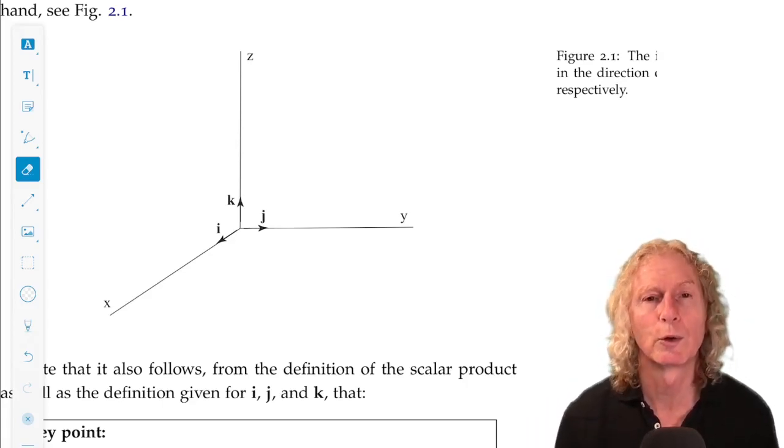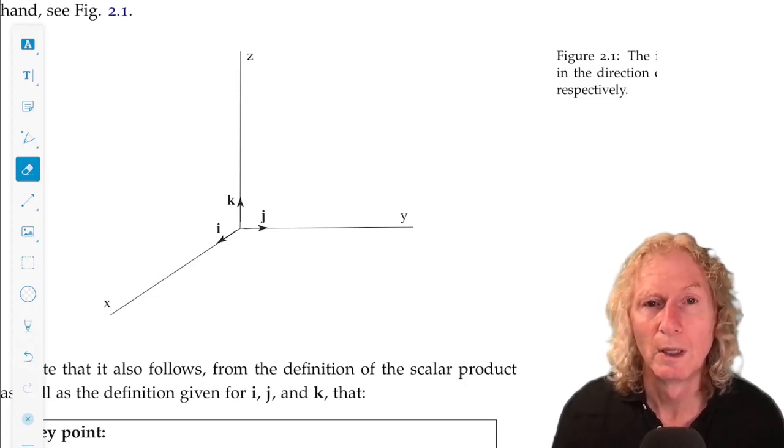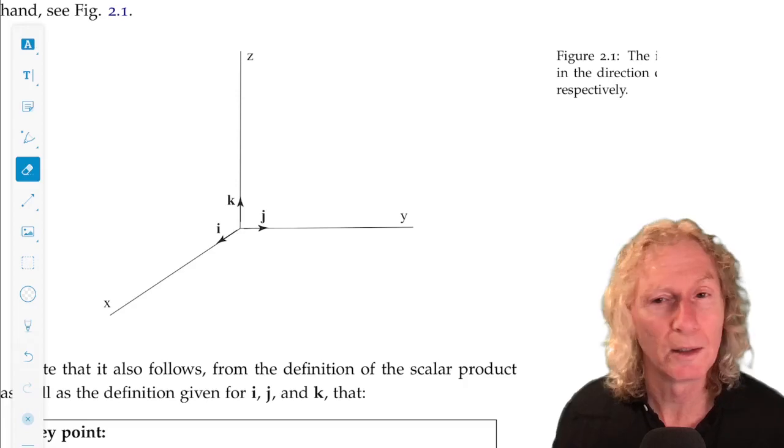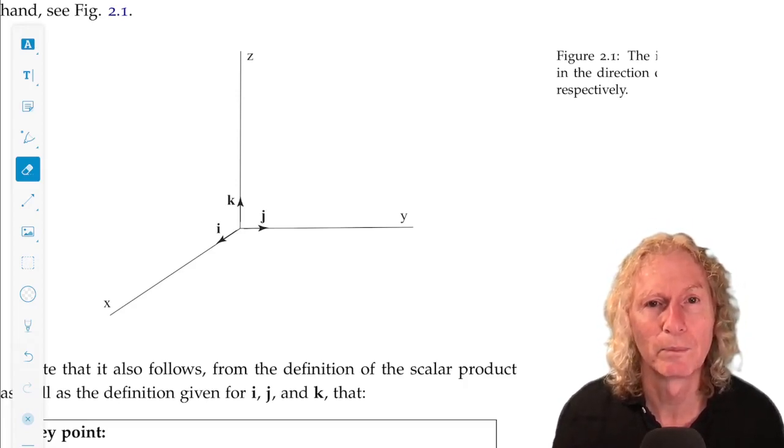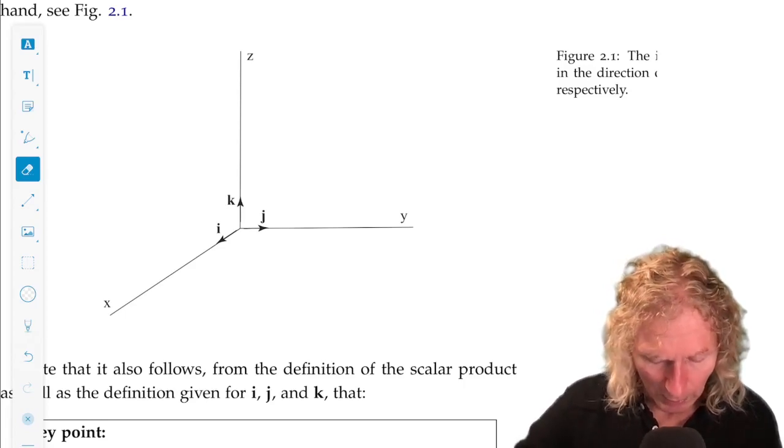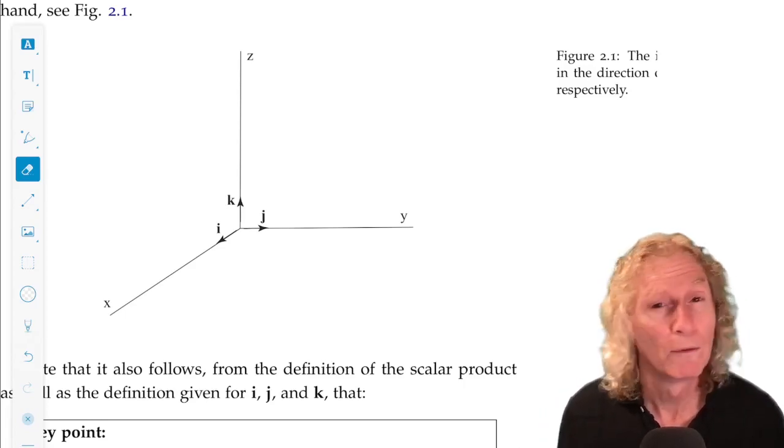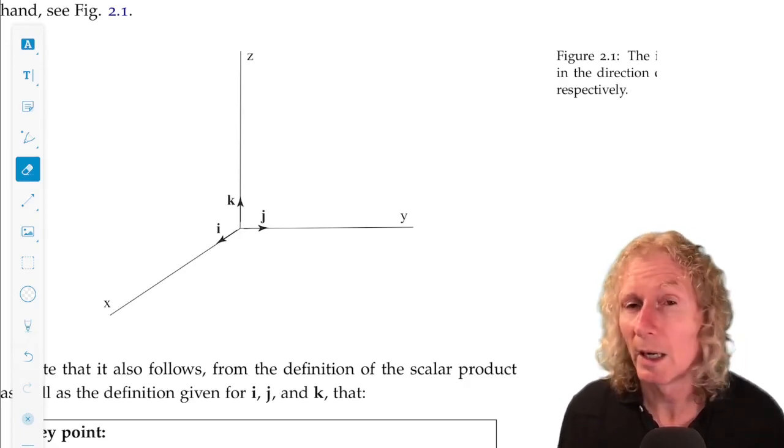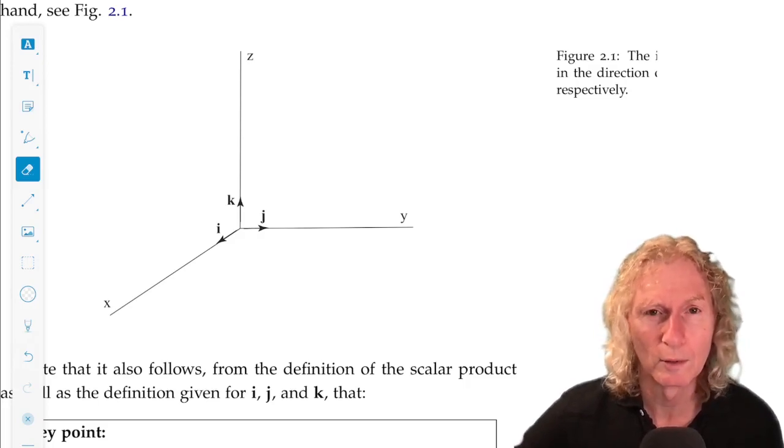Put your right hand, thumb in the direction of i, fingers in the direction of j, and k needs to be coming straight out of your hand. And then you can do thumb in the direction of j, fingers in the direction of k, and i should be coming straight out of your hand, and so on.